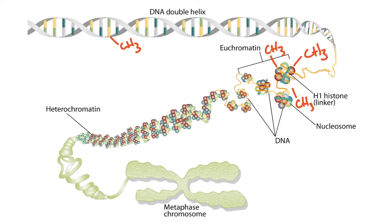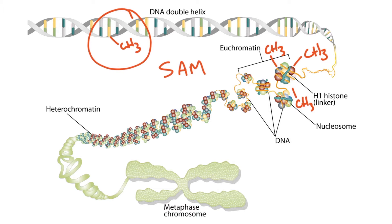For example, methylation of cytosine in DNA can result in imprinting. Both of these reactions require the molecule S-adenosylmethionine, or SAM, which is involved in methylation reactions.